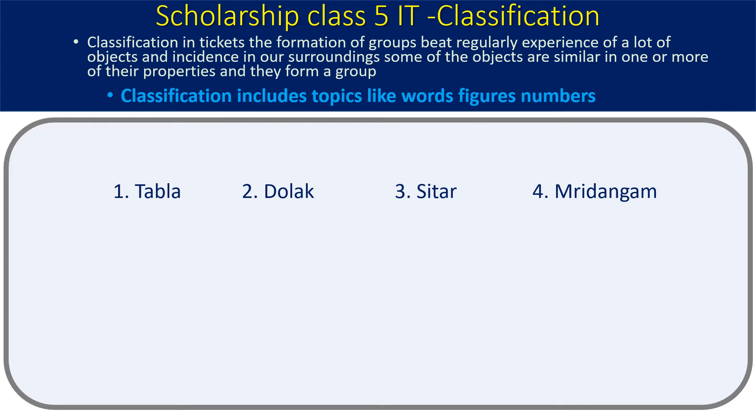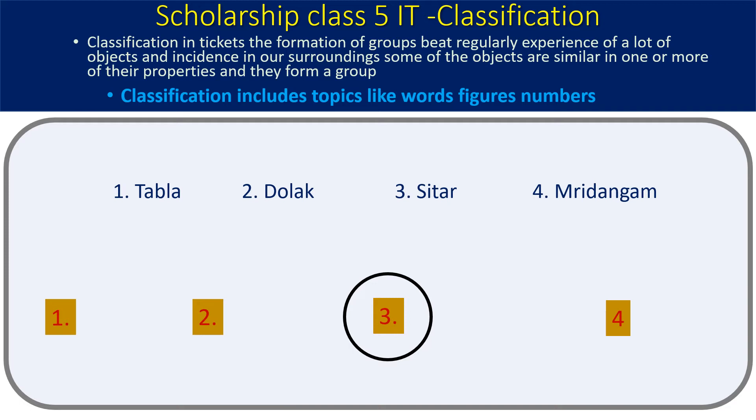All of these are musical instruments, but think about how they are played. Tabla is something we beat like a drum. Dalak is also like that. Mrdang is also beaten. But sitar has a string. So tabla, dalak, and mrdang form one group — all have a beating surface — and sitar is the odd one out because it has strings.